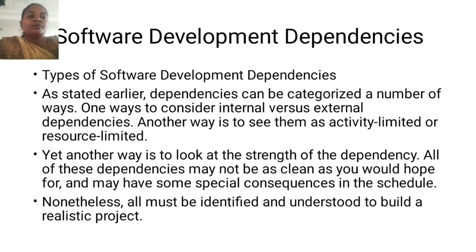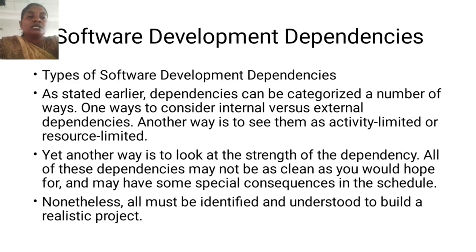Software Development Dependencies — Types of Software Development Dependencies. As stated earlier, dependencies can be dictated in a number of ways. One way is to consider internal versus external dependencies. Another way is to see them as activity limited or resource limited. Yet another way is to look at the strength of the dependency.